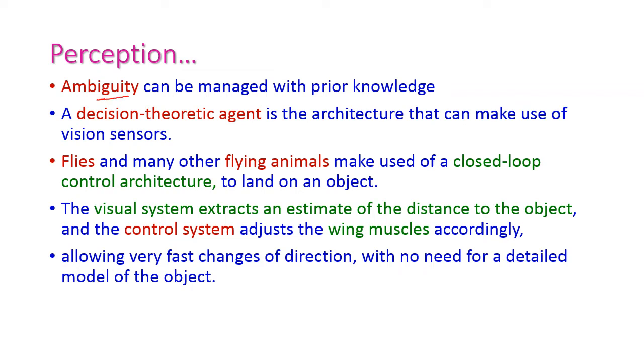This ambiguity may be managed with prior knowledge. The prior knowledge is actually stored in our dataset. Here we are having a special sensor called decision theoretic agent. This agent has its own architecture with special vision sensors.